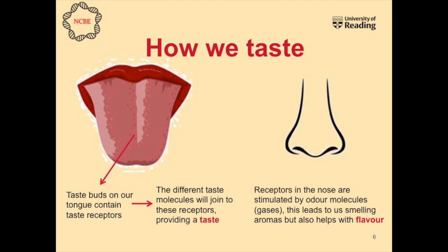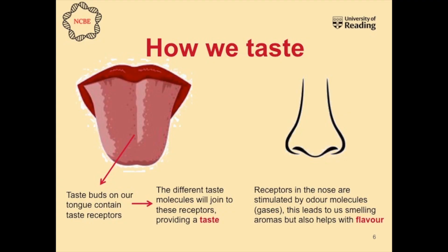But before we do that, we're just going to have a talk about taste and how both your nose and your mouth interplay with sensory science. Now if you stick out your tongue — you can do this now or the next time you're in front of a mirror — you'll see little bumps. Everyone's got different amounts of these bumps and some people have them in different places. Now those bumps contain your taste buds, and within your taste buds you've got what we call taste receptors. Different molecules, whether that's salt molecules or sugar molecules, will travel to those receptors, join to them, and that is how you then get a taste for a certain modality — whether that's sweet, salty, or bitter.